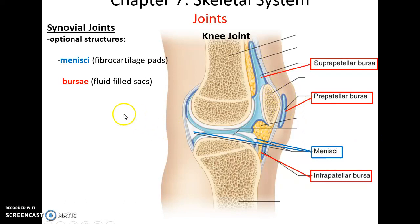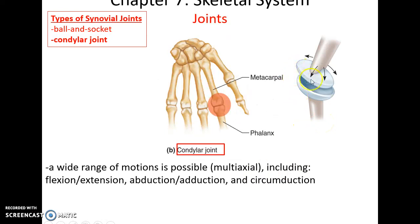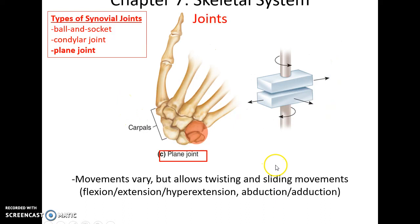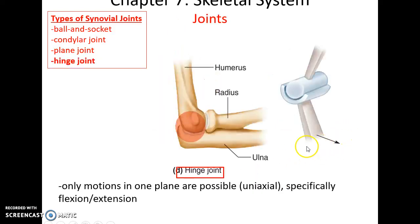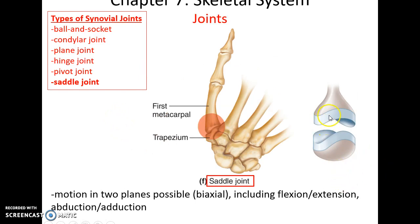There are different types of synovial joints based on movement. The ball-and-socket joint has a rounded head fitting into a deep socket; these are multi-axial, allowing many kinds of movement. The condylar joint has a slightly rounded structure fitting into a depression and is also multi-axial but allows fewer movements. Plane joints form when two flat bones come together and allow biaxial sliding or twisting. Hinge joints have a rounded bone fitting into a curved structure but are uniaxial, allowing only one kind of movement. Pivot joints allow only rotational movement and are uniaxial. Saddle joints are biaxial, with a rounded joint fitting into another rounded joint.